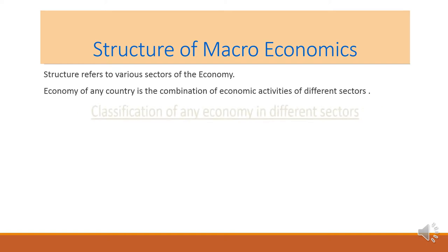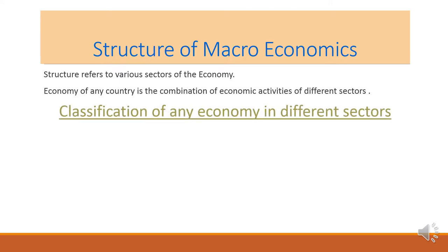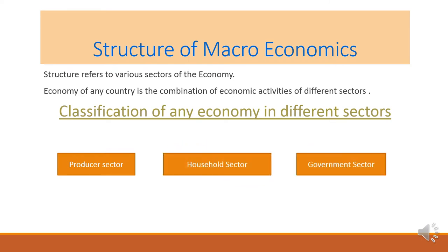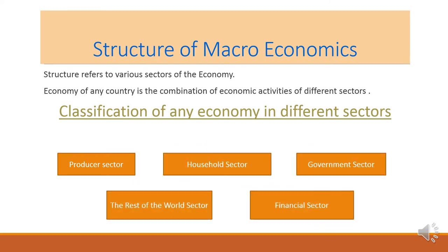Throughout the world, when we talk about the economy of any country, there are different sectors working in our economy: the producer sector, household sector, government sector, the rest of the world sector, and the financial sector. So the structure of macroeconomics is the combination of all these sectors. Let's discuss about these sectors one by one.